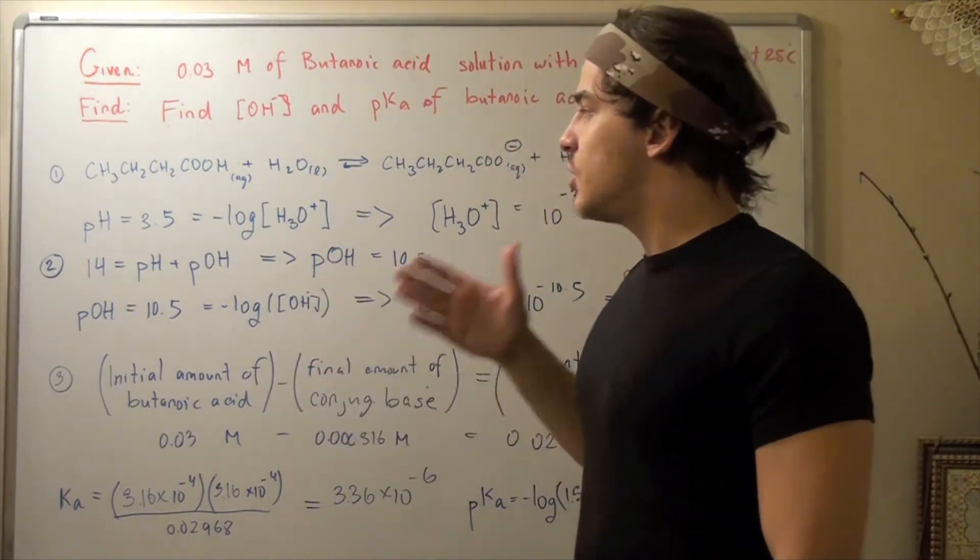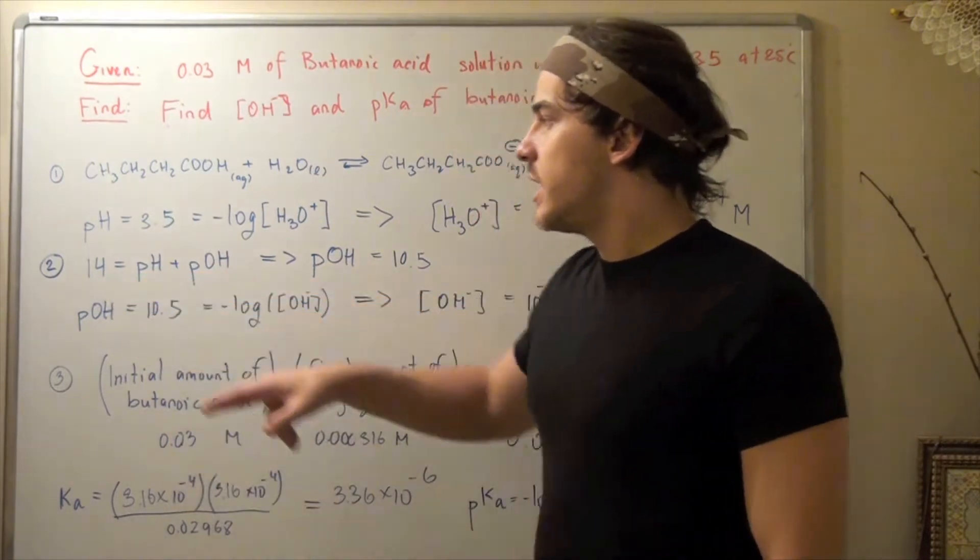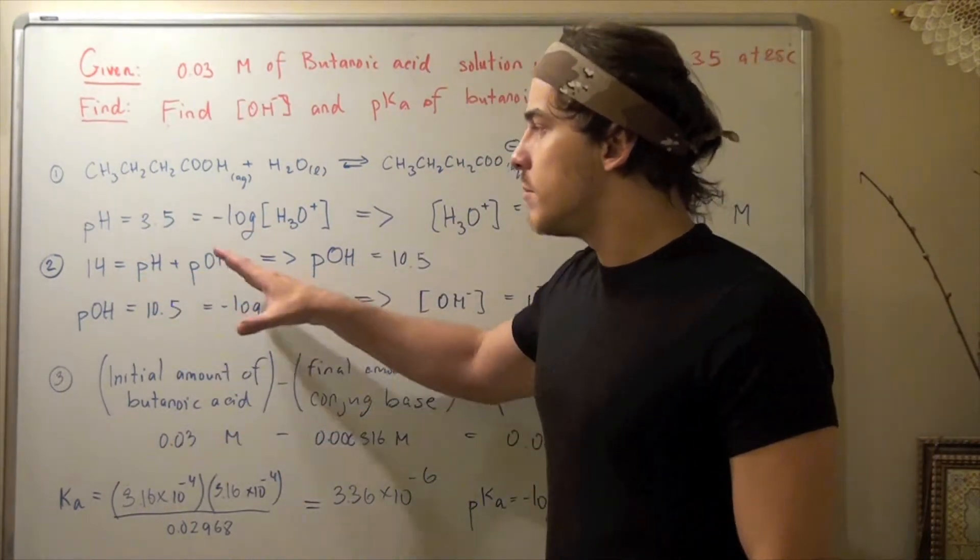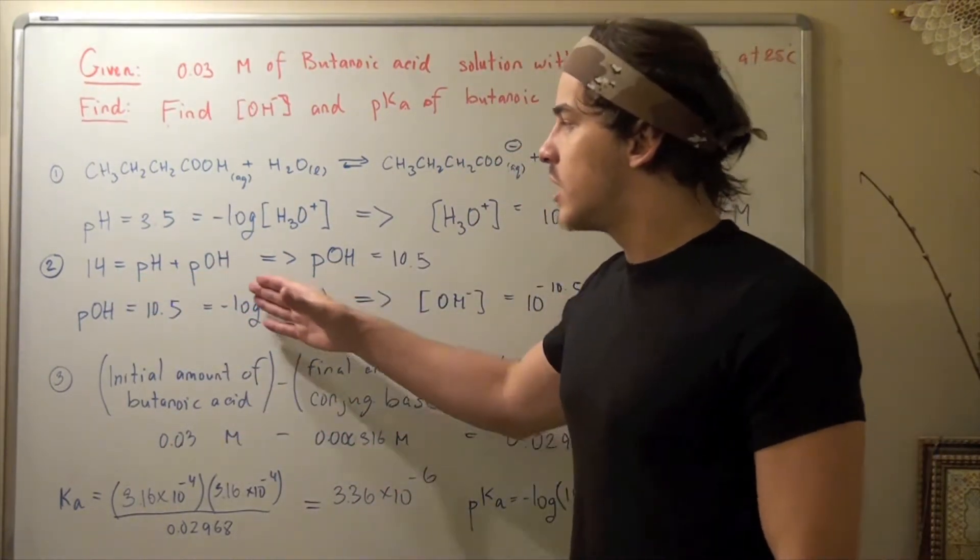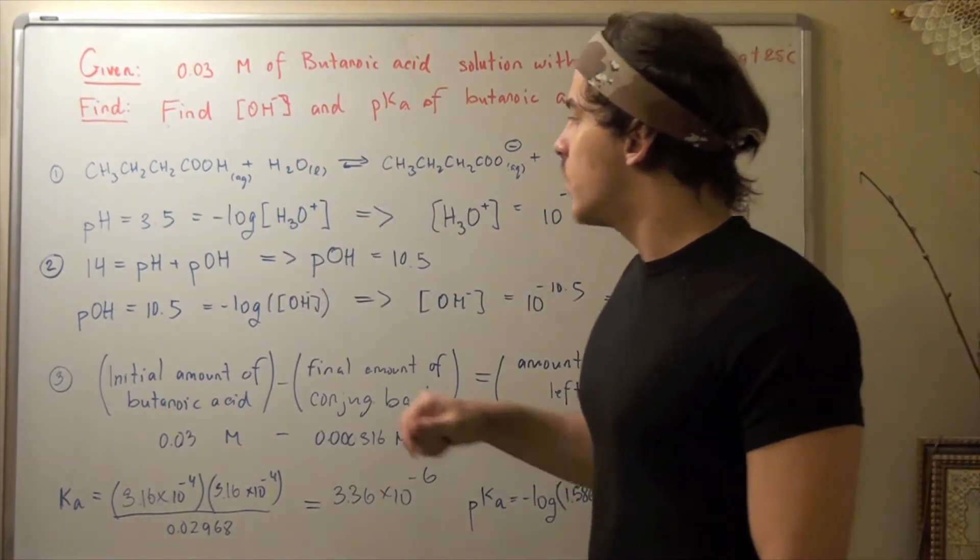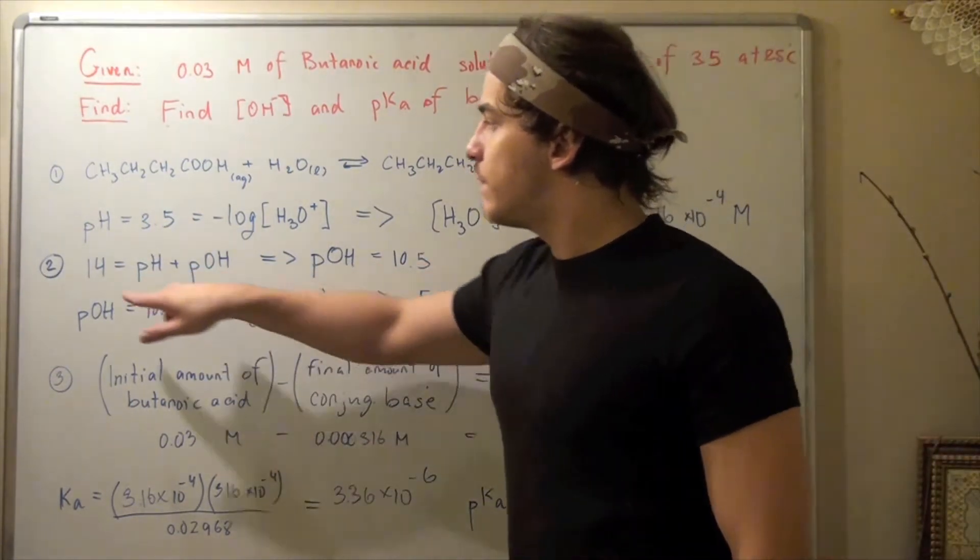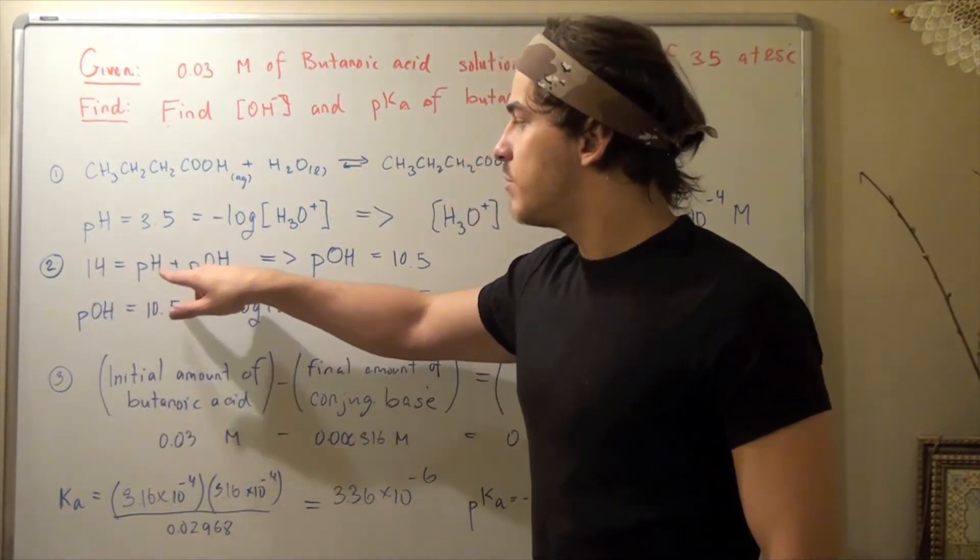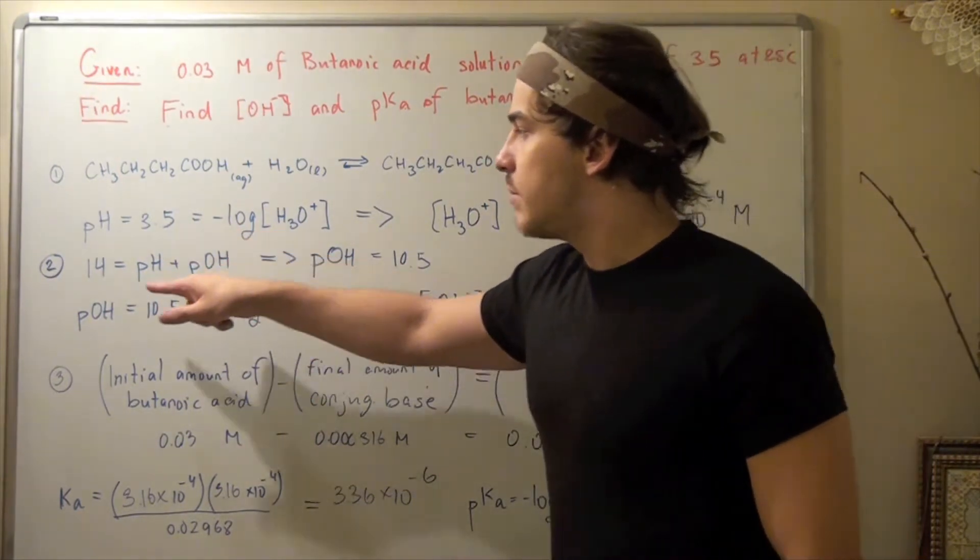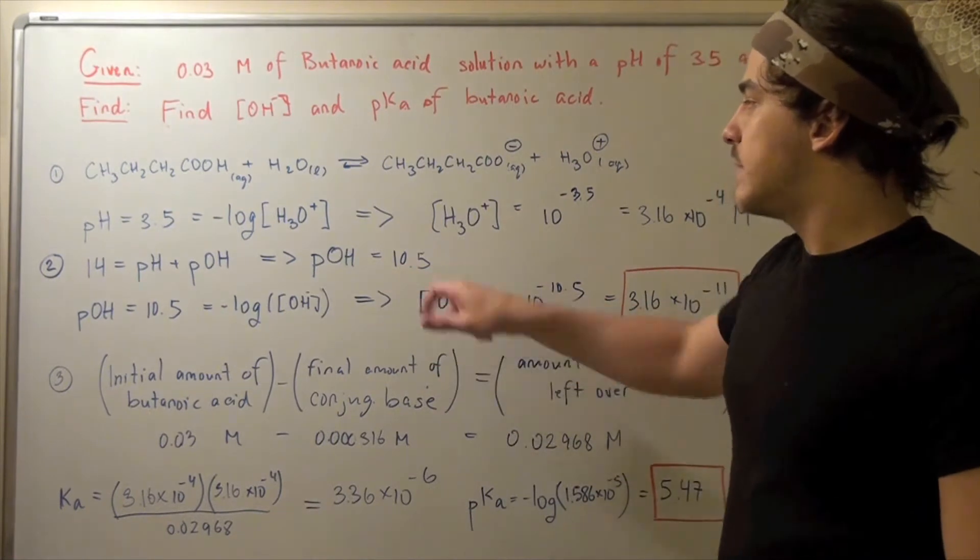Now the first thing I do is use the formula pH plus pOH equals 14. If you're not certain about this formula and don't know where it comes from, check out the link below. So I simply take our pH, plug it in, and we get 14 equals 3.5 plus pOH. Subtract by 3.5 and I get pOH is equal to 10.5.